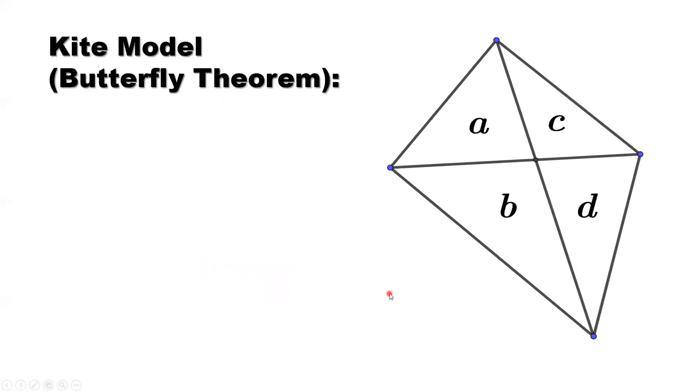Now, what is the kite model? Sometimes we call it the butterfly theorem. The ratio of the two areas of the top two triangles, a over c, equals the ratio of the bottom two areas of the triangles, b over d. Keep the same order: left over right equals left over right.